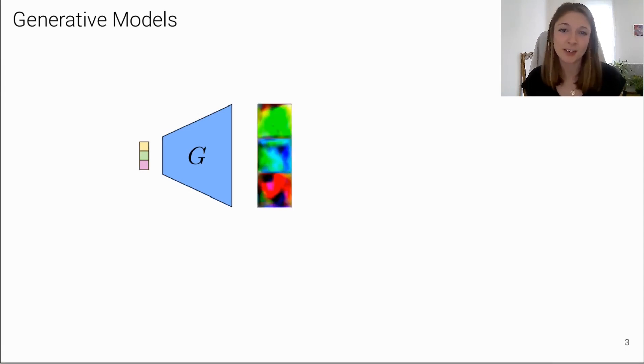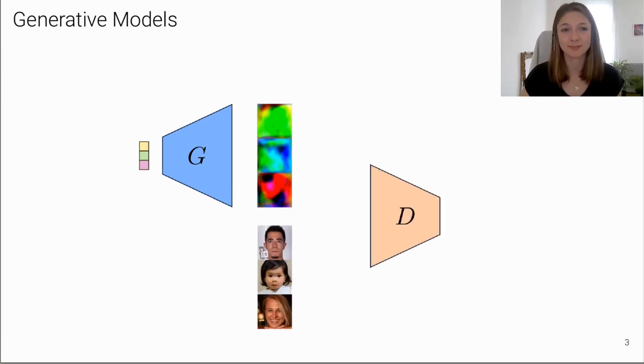Of course, at the beginning of training, generated images are not photorealistic, but rather look like abstract images. To train the generator, we show both its generated images and real images from the training set to another neural network, the discriminator. The discriminator tries to distinguish between real and fake samples.